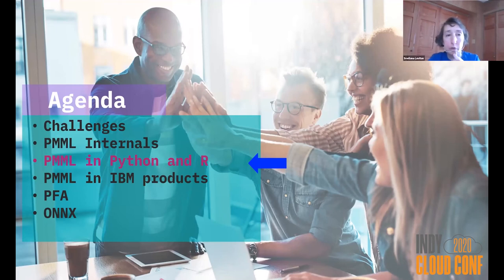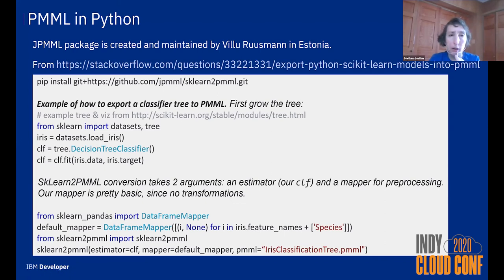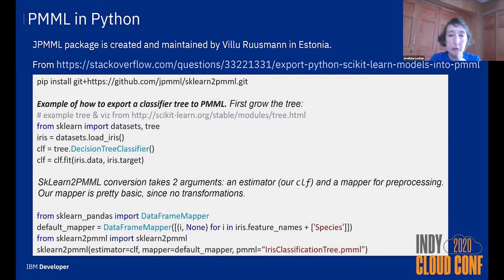For Python there are several PMML open source packages. One is JPMML, which has a method called sklearn2pmml that lets you take a scikit-learn model and convert it to PMML. There is also another open source library called Nyoka, created by people from Zementis — a small company in San Diego that was acquired by Software AG — and they've been very active in PMML development for a number of years.